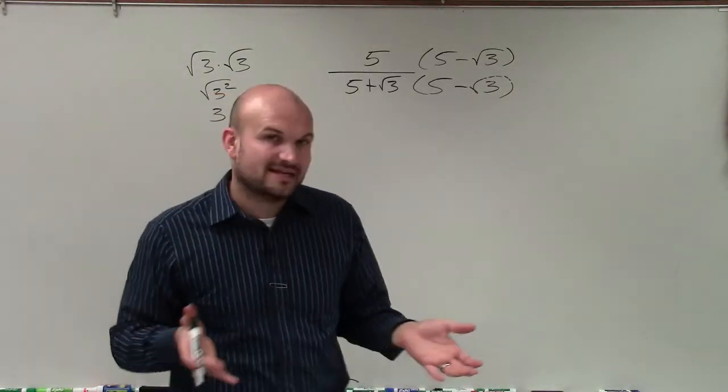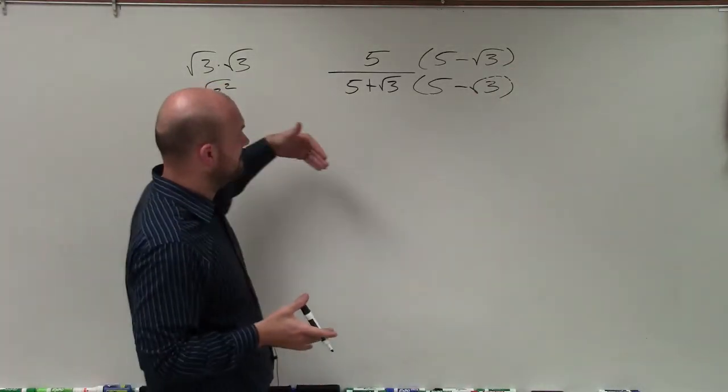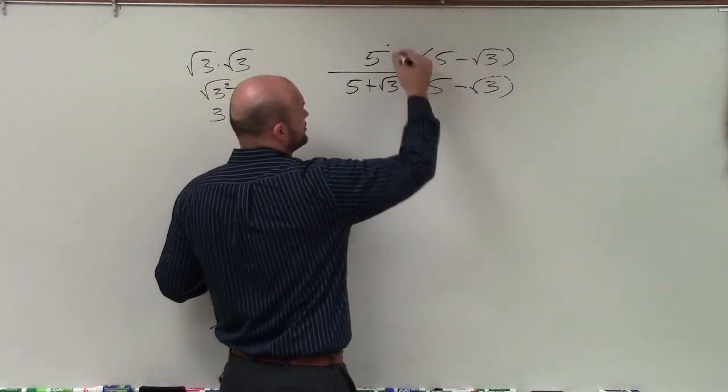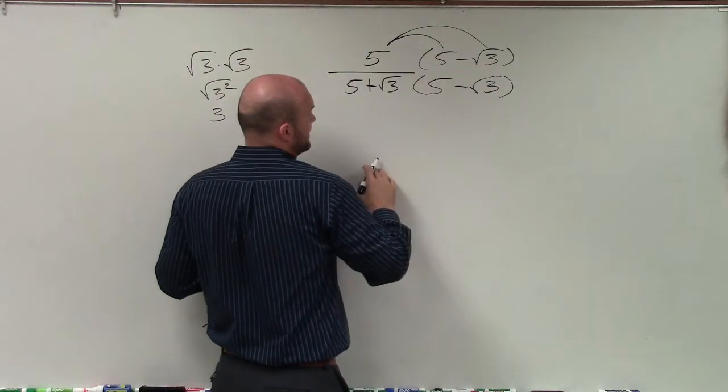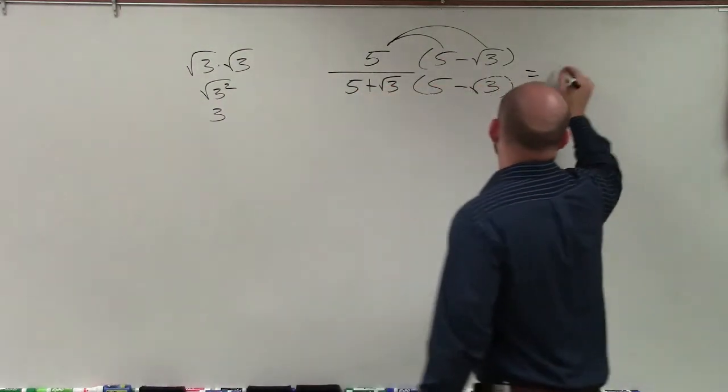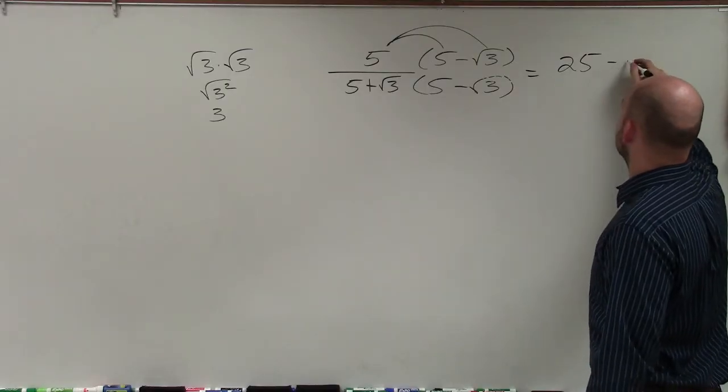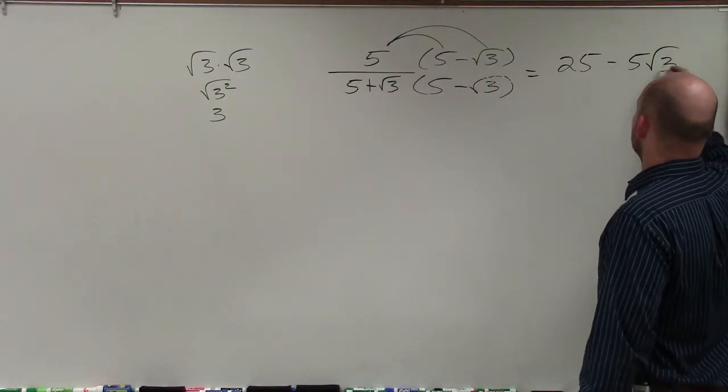So now, the next thing I need to do is apply the distributive property. Let's do the numerator first. 5 times 5, and then 5 times negative √3. Well, 5 × 5 = 25, and 5 times negative √3 is negative 5√3.